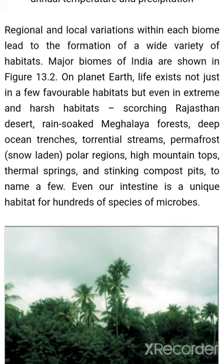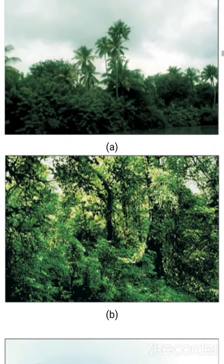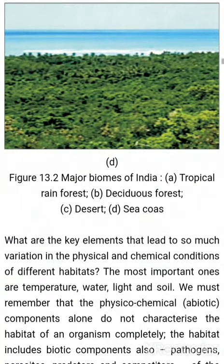Regional and local variation within each biome lead to the formation of a wide variety of habitats. Major biomes of India are shown in Figure 13.2. On planet Earth, life exists not just in a few favorable habitats but even in extreme and harsh habitats — scorching Rajasthan desert, rain-soaked Meghalaya forest, deep ocean trenches, torrential streams, permafrost polar regions, high mountain tops, thermal springs, and stinking compost pits. Even our intestine is a unique habitat for hundreds of species of microbes. Figure 13.2 shows major biomes of India: tropical rainforest, deciduous forest, desert, and sea coast.